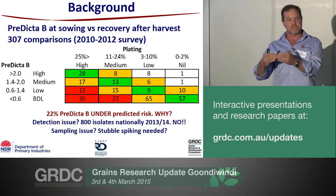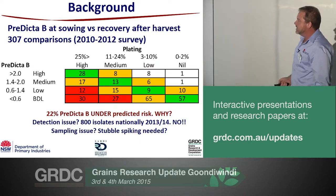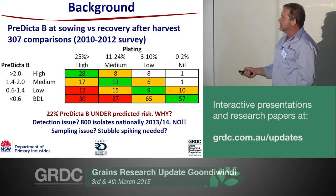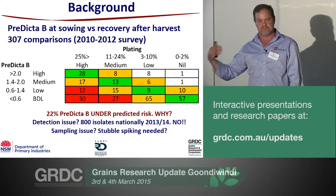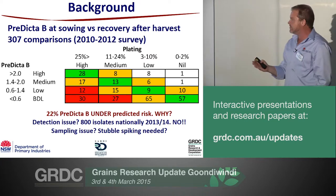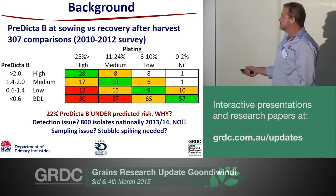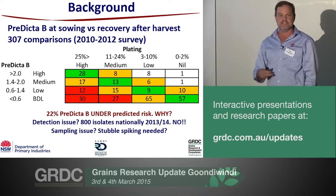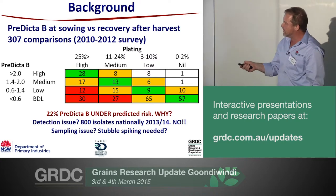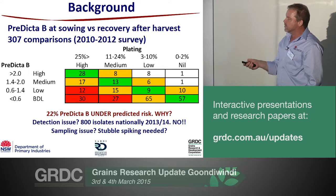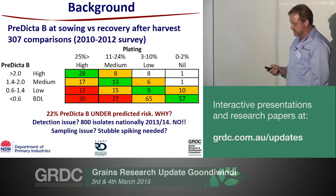So the first thing we investigated was: is it a detection issue? There are three probes that pick up crown rot variance in the current test. We can put that to bed — across 800 isolates nationally, fusarium came off symptomatic plants and there's no variant of the crown rot fungus not being detected by the current probes. So it's not a detection issue. Then it comes back to a sampling issue. Through the survey, we tended to find these underestimated paddocks occurred after a wet summer. We'll talk about stubble spiking — adding bits of stubble from the paddock into your soil test.